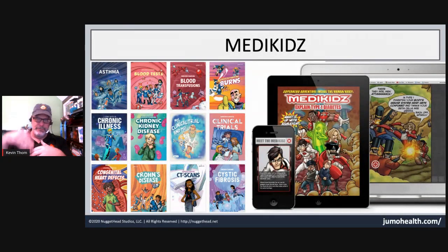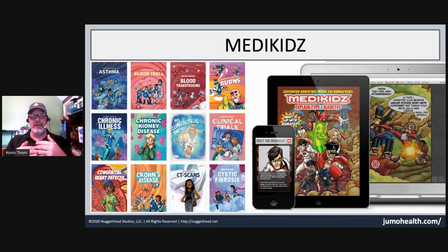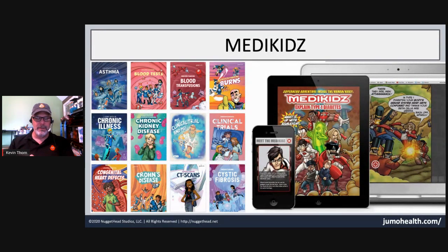Now let's jump back to children. MediKids — on a website called Jumo Health — offers fantastic little interactive graphic novels geared toward middle school age, around fifth through eighth grade. It teaches children about conditions like asthma, Crohn's disease, clinical trials, and kidney disease — anything a child might be going through medically. A set of little superhero characters explain the condition: it's okay, you're going to be fine, you just have this condition, millions of people have the same thing. It lifts the confidence of children reading the books, showing them they're not alone. I would highly recommend checking out Jumo Health.